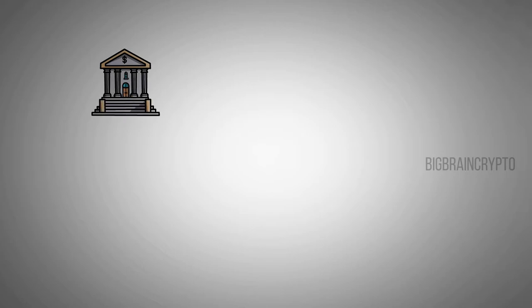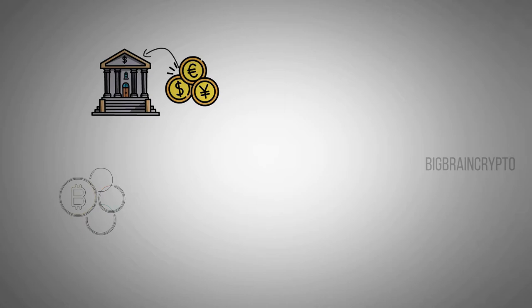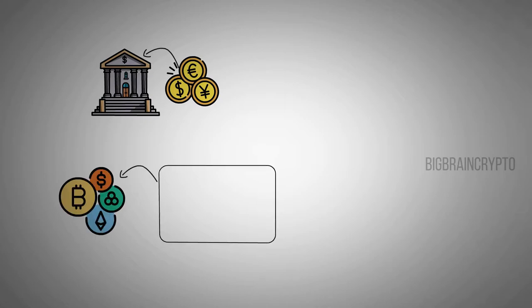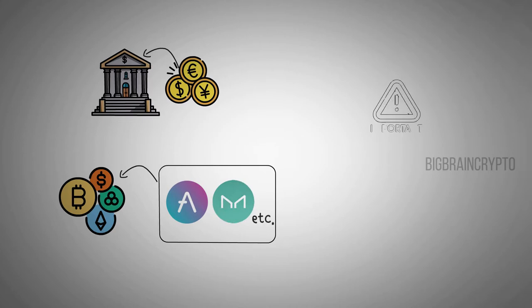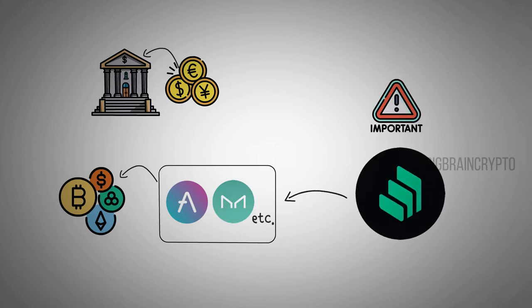Like how banks serve traditional currencies, cryptocurrencies have their own lending and borrowing platforms, such as Aave, Maker, etc. Today, we are going to discuss one of the most important of these platforms. It's called Compound.